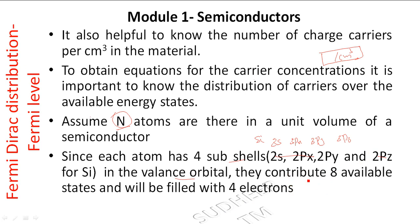In crystal formation, we have four electrons in bonding orbitals and four states in anti-bonding orbitals. The anti-bonding orbitals form the conduction band, and the bonding orbitals form the valence band.